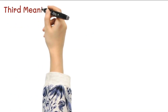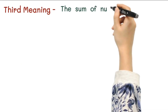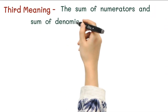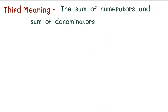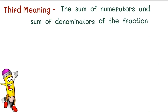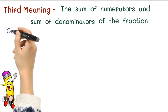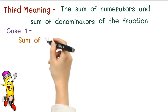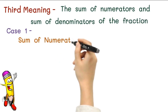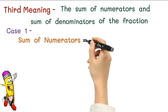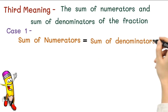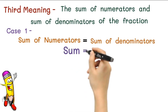The third meaning of this sutra is related to the sum of numerators and the sum of denominators of fractions. There are two cases. In Case 1: if the sum of numerators is equal to the sum of denominators, then equate that sum to 0.